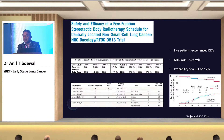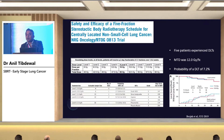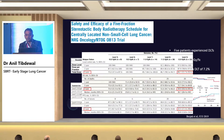RTOG-0813 was a dose escalation trial examining dose per fractionation for central tumors. Starting at 10 Gy per fraction and escalating, only 5 patients out of approximately 90 experienced dose-limiting toxicity. The maximum tolerated dose was found to be 12 Gy per fraction. The 3-year overall survival was approximately 54% and the 3-year local control was approximately 85% for central tumors.